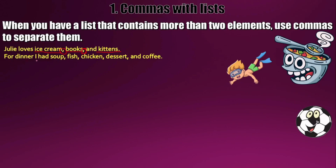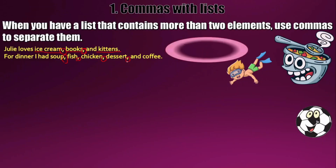For the second example: 'For dinner, I had soup, fish, chicken, dessert and coffee.' There are five elements in this list — soup, fish, chicken, dessert, and coffee — all nouns. I used four commas to separate each element in the list. Remember, we use commas to separate each element. In the first sentence there is one list of nouns, and in the second sentence there is another list of nouns.